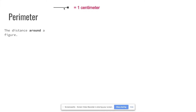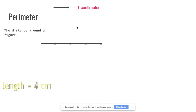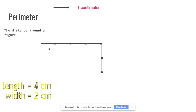Let's check this out. Let's say each one of these little symbols represents one centimeter. Let's count: one, two, three, four centimeters — so the top part of the rectangle tells us the length is four centimeters. Now let's check the width: one, two centimeters — so the width is two centimeters.